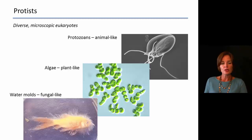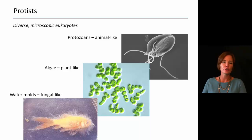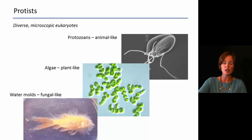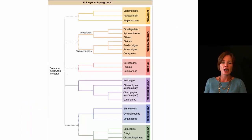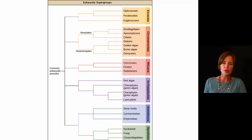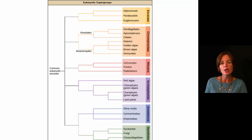The third group is going to be the water molds, which will be very fungal-like. So we do have several different smaller groups of protists to discuss. Now, looking at the organization of protists: protists are considered polyphyletic, which means there is not just one common ancestor that gave rise to all the different protists.